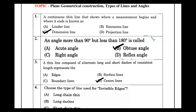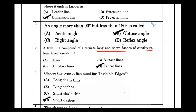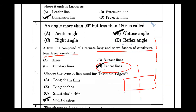A thin line composed of alternate long and short dashes represents a center line. There is a long line and a short line alternating. This pattern is used to denote a center line.